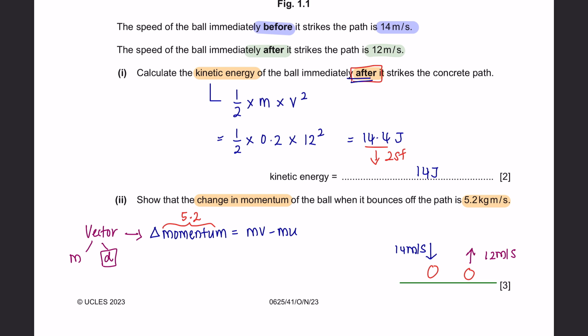Momentum is a vector quantity, which means that it has both magnitude and direction. So when we do the calculation, we have to indicate its direction. If the initial direction was downward, we consider this to be the positive direction. And when it bounces off, the opposite direction would be negative. So in our calculation, we have to include the positive and negative value to indicate its direction. So the mass is 0.2 multiplied by its final velocity, which is negative 12. Take away 0.2 multiplied by its initial velocity, which is positive 14. And you will get a value of negative 5.2 kilograms meter per second. So the negative here is just an indication of direction.